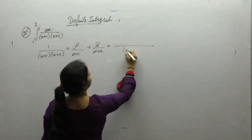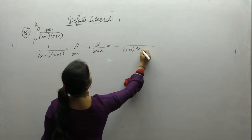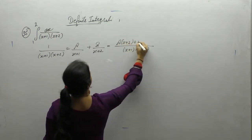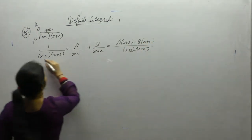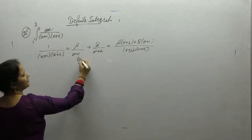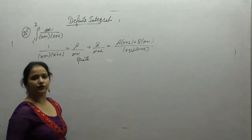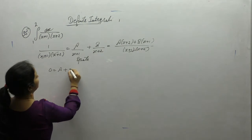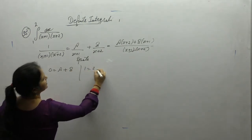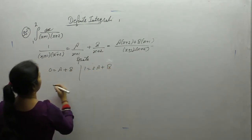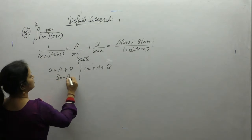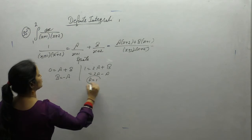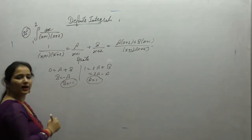Take the LCM: 1 = A(x+2) + B(x+1). Equate like coefficient terms: coefficient of x gives A + B = 0, constant term gives 2A + B = 1. So B = -A, and from here we get A = 1 and B = -1.